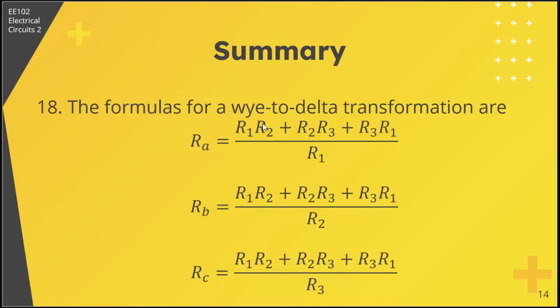But for Y to delta, you take the three resistors in your Y two at a time, so the product of them taken two at a time: R1 times R2, R2 times R3, R3 times R1, divided by the opposite resistor.